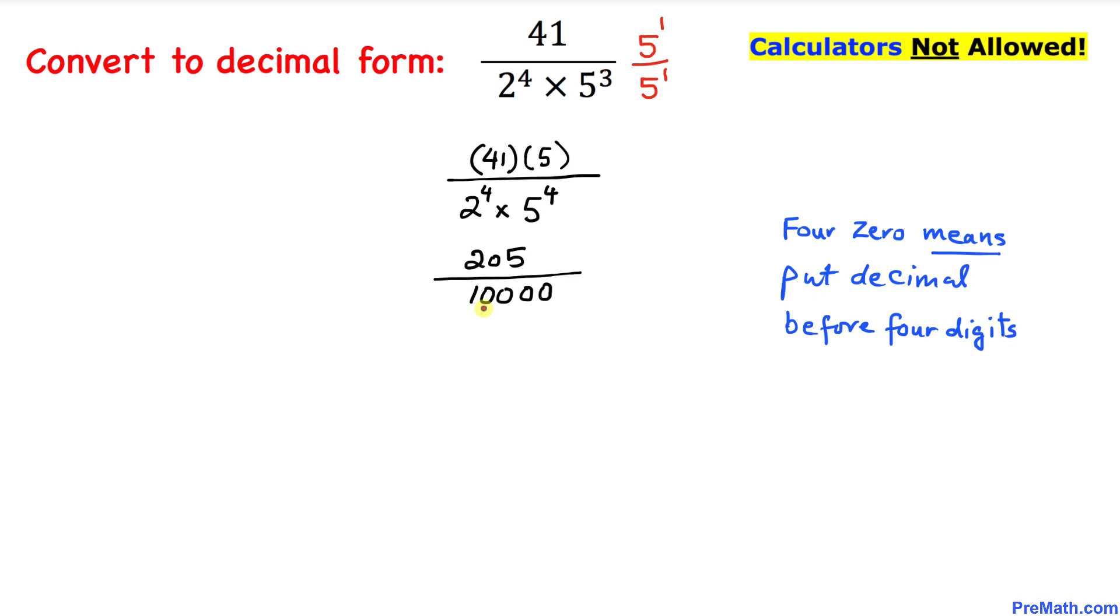Now we can see there are 4 zeros after this 1. So these 4 zeros means that we are going to put a decimal before 4 digits, and we can see we have 3 digits: 1, 2, 3. Let's put another zero to make 4 digits before this decimal.